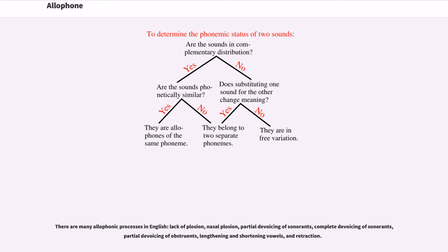There are many allophonic processes in English: lack of plosion, nasal plosion, partial devoicing of sonorants, complete devoicing of sonorants, partial devoicing of obstruents, lengthening and shortening vowels, and retraction.